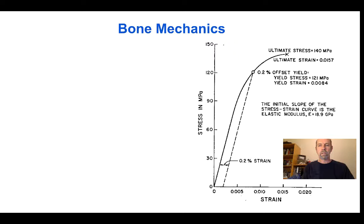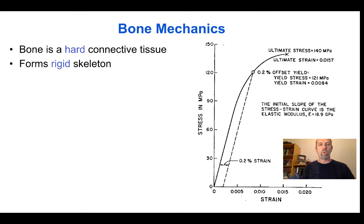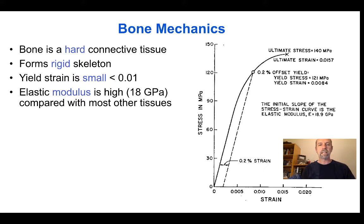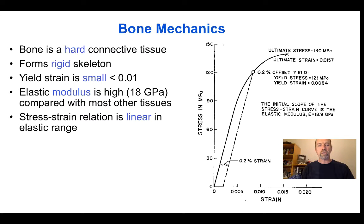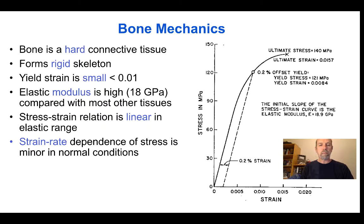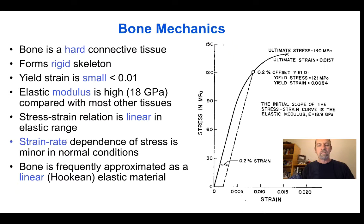Welcome back to Biomechanics. We have now seen that bone is a hard connective tissue that forms the rigid skeleton. Its yield strain is less than 1% and its elastic modulus is high compared with most other tissues. The elastic modulus of compact human long bone is approximately 18 gigapascals. The stress-strain relationship is linear within the elastic range and it does depend on strain rate, but this dependence is minor. For these reasons, bone is frequently and well approximated as a linear Hookean elastic material.